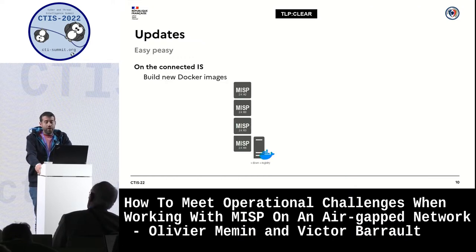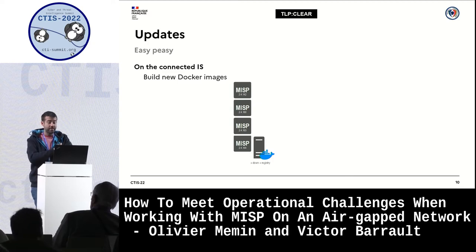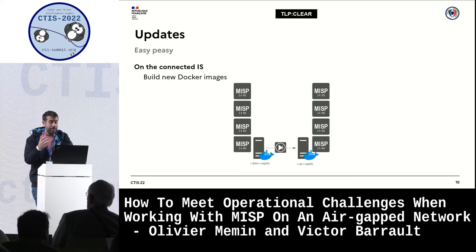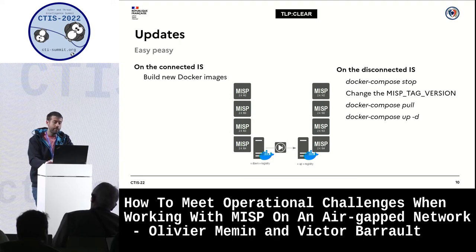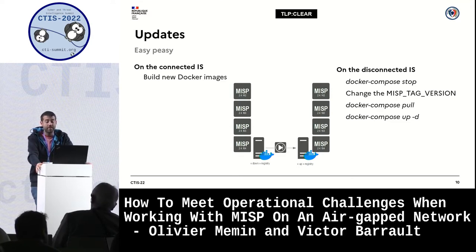Let's have a word on the update process now — it appears much simpler. It requires having the newest Docker images built on the connected system, and this task can even be automated. Images are stored and then synchronized from the down registry to the up registry. Then you may stop containers, change the MISP tag version in the Docker Compose file, and restart. The updated containers will be automatically built and started, and you benefit from the latest release.